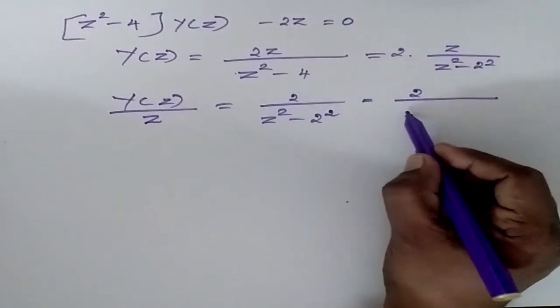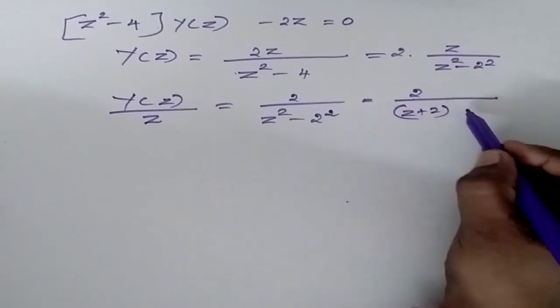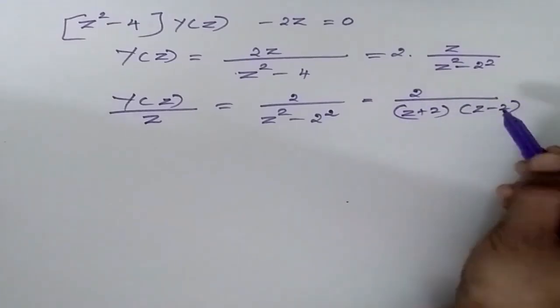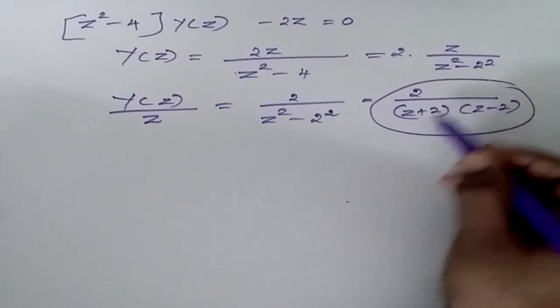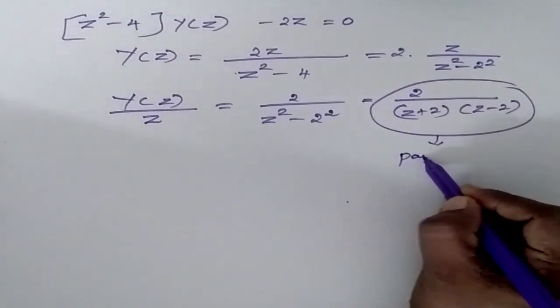This I can write as 2 by Z plus 2 into Z minus 2. Now I am going to solve this by partial fractions.